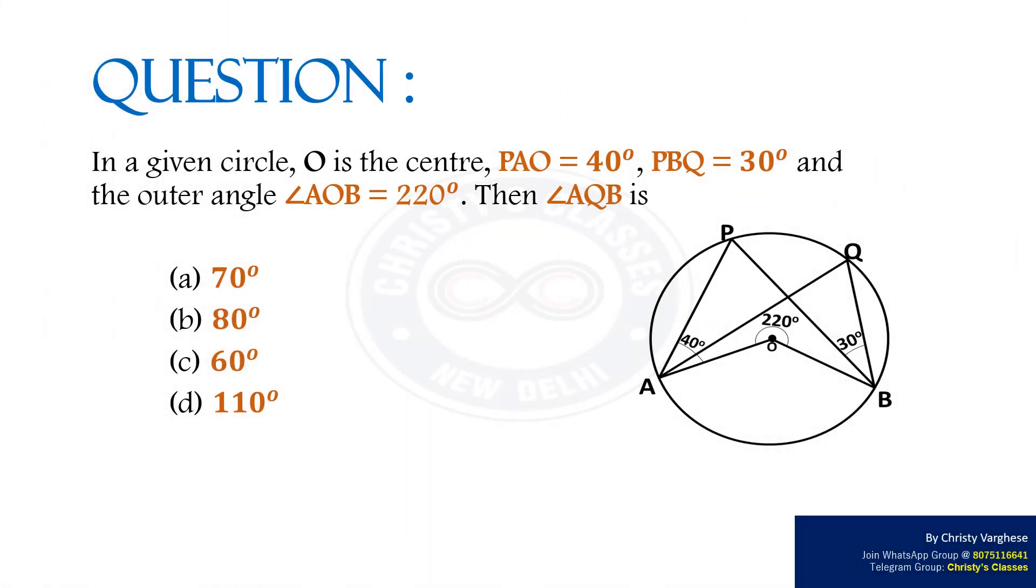Question. In a given circle, O is the center, angle PAO equals 40 degrees, angle PBQ equals 30 degrees, and the outer angle AOB equals 220 degrees. Then angle AQB is: